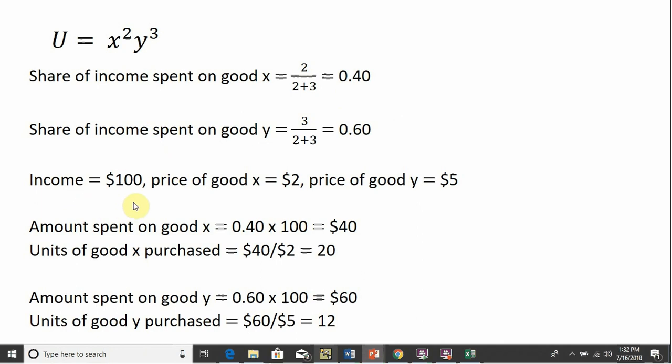All right, so say we have an income of $100. The consumer has $100 of income. In the market, the price of good x is $2 a piece, and the price of good y is $5 a piece. So the amount spent on good x is going to be 0.4 multiplied by 100. This consumer will spend $40 on good x. How many units will the consumer buy? Well, if you're spending $40 on good x and the price of good x is $2 a piece, 40 divided by 2 means you'll buy 20 units of good x.